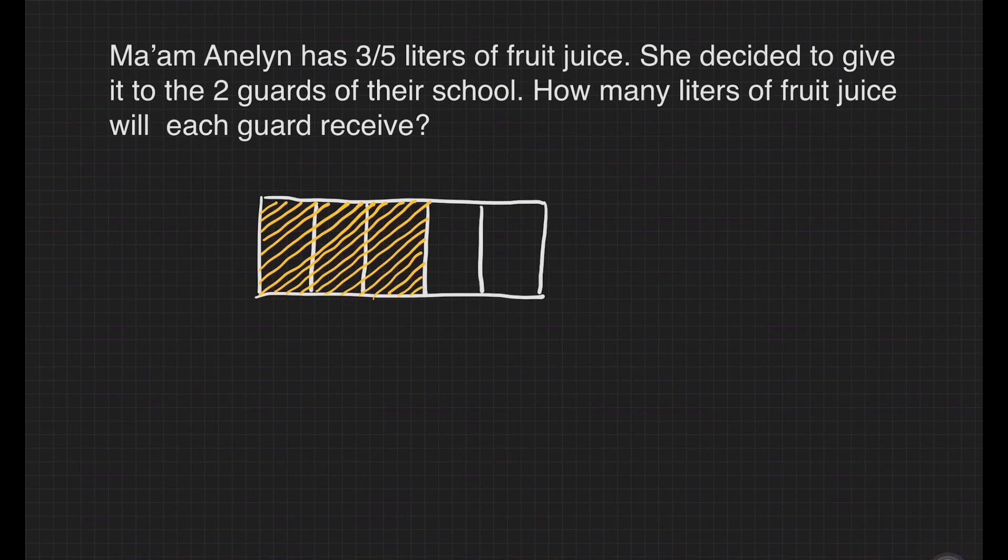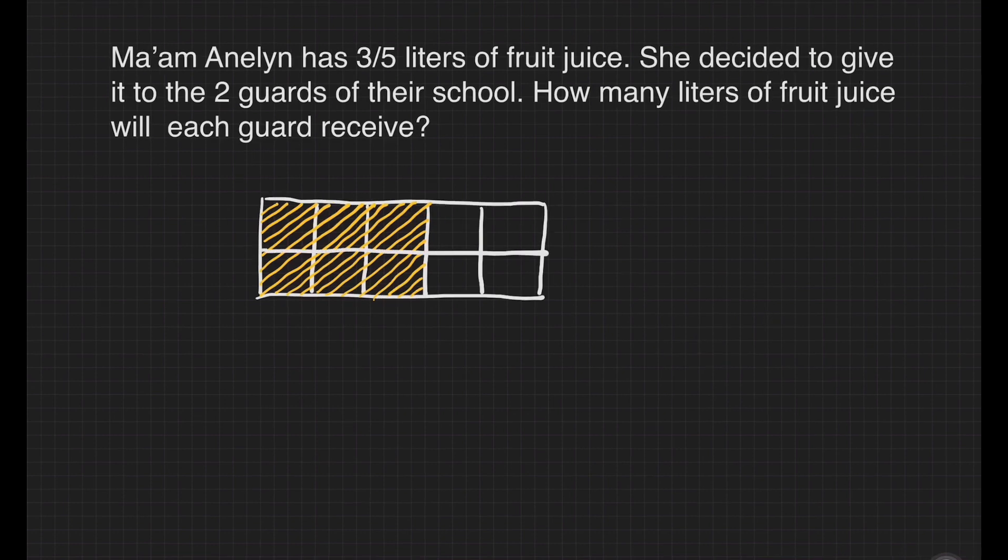This represents the 3 fifths liters of juice that Mom Aniline will give to the guards. How many guards do we have? We have 2, so we'll be dividing it into 2 equal parts. We're ready to give it to the guards and this part is for the first guard and this one is for our second guard.